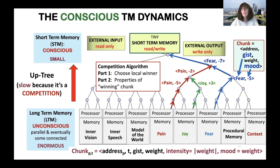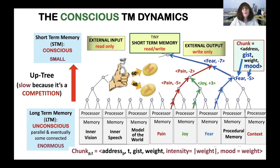The competition algorithms have two parts: choosing the local winner and determining the properties of the chunk that moves up the competition tree. Our model of choice is probabilistic. A nice property is that the probability of a winner is totally independent of the location of the processor, so one can commute processors and that is inconsequential to the results.